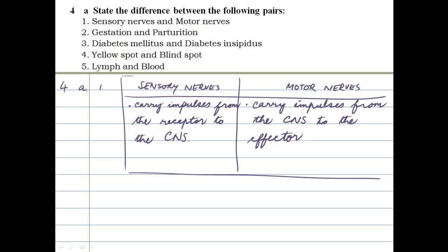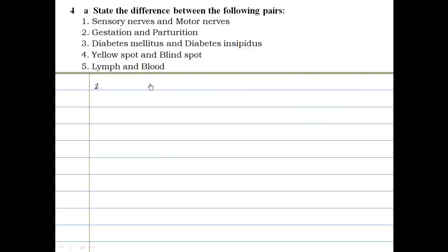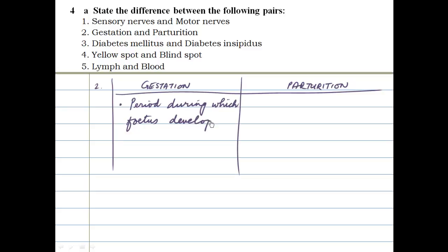The second one says gestation and parturition. The second one, we have gestation and parturition. Gestation is the period during which the fetus develops within the uterus, basically a time period of 280 days approximately.